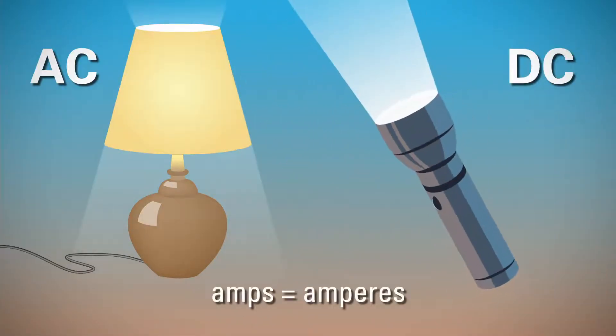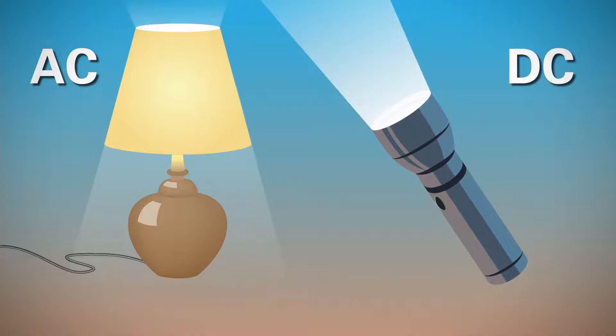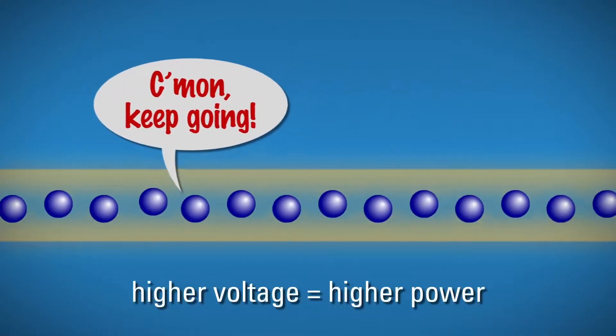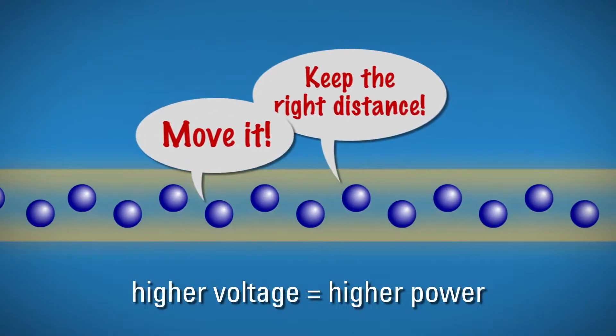Whether it's AC or DC, the electric current is measured in amps. And the voltage is the pressure put behind the amps to make it higher or lower.